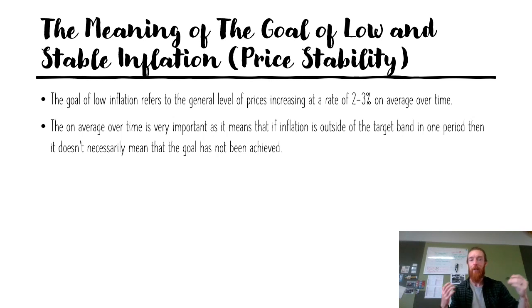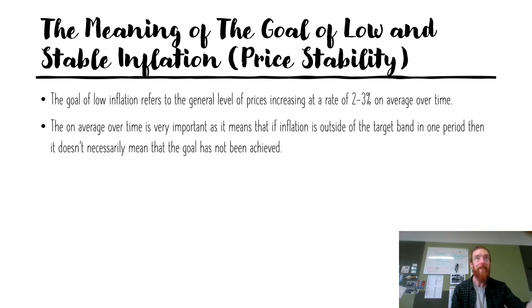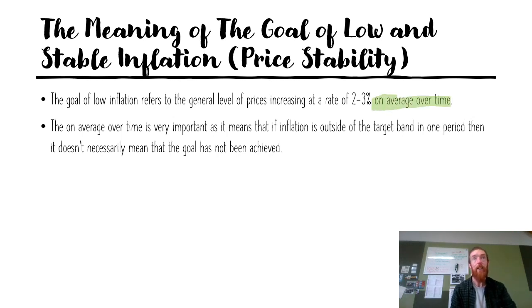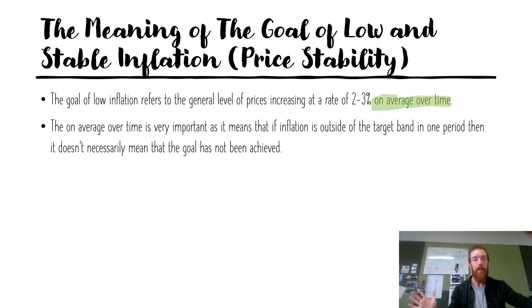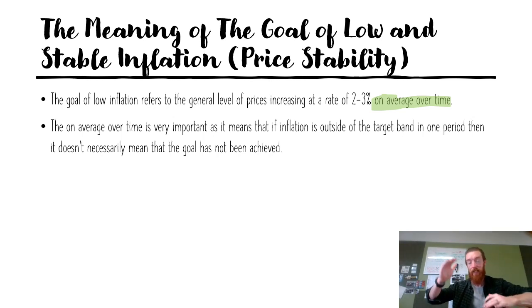The meaning of the goal of low and stable inflation, or price stability, is that the goal of low inflation is for the general level of prices to be increasing at a rate of 2% to 3% on average over time. In this definition, 'on average over time' is incredibly important, because it means not every single period has to be between 2% and 3% — just over an economic cycle, averaging out in that rate. So if it's 1% in one period and 5% in another, and it averages out to be in that window, that is fine.